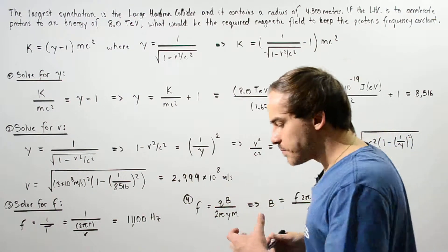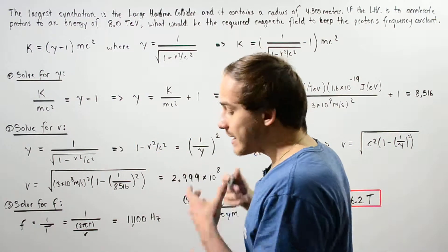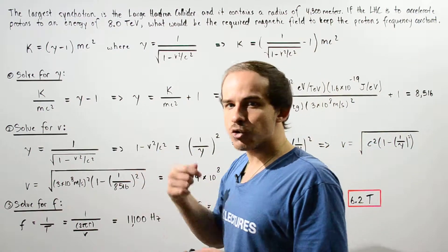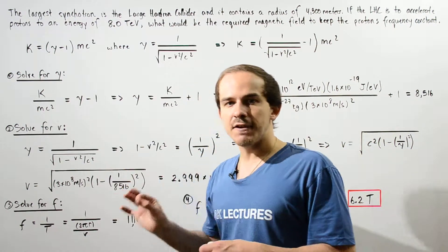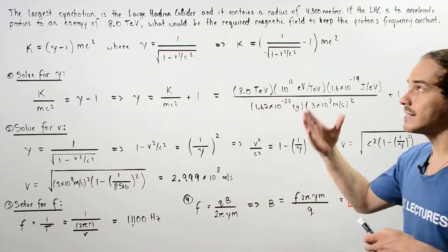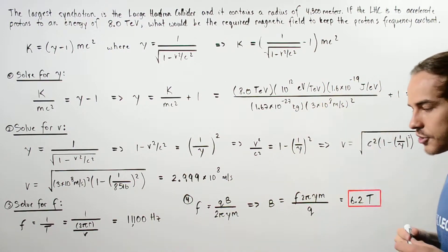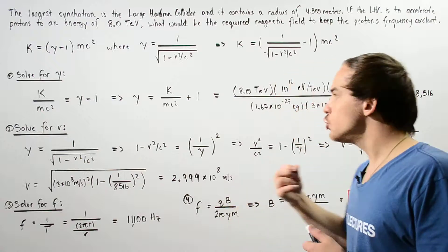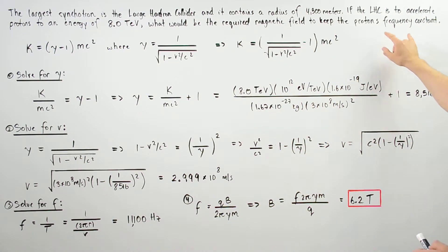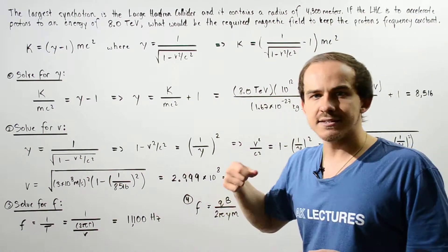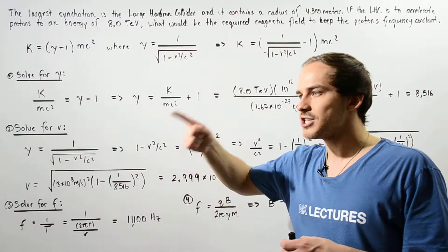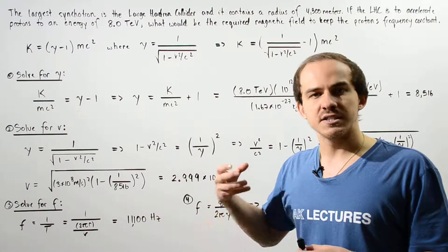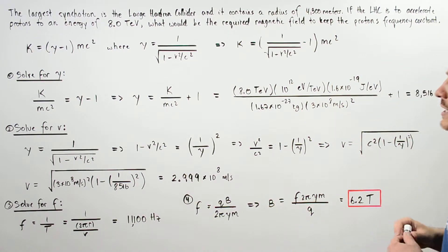What the synchrotron accelerator actually does is it continually increases the magnetic field inside the accelerator as the proton's velocity increases, to make sure that the cyclotron frequency remains constant — because as the velocity increases, the relativistic mass of that particle increases.